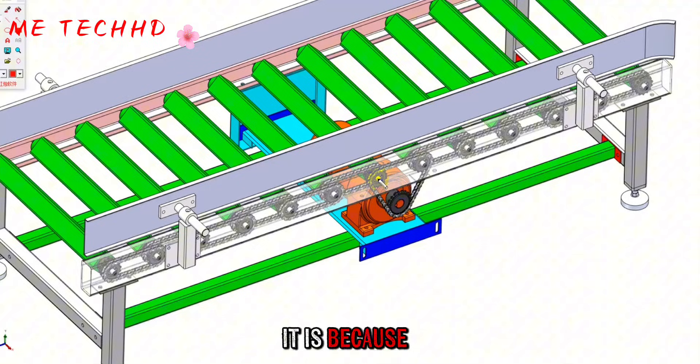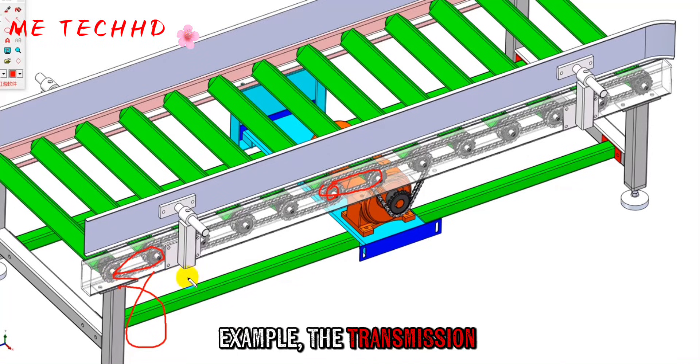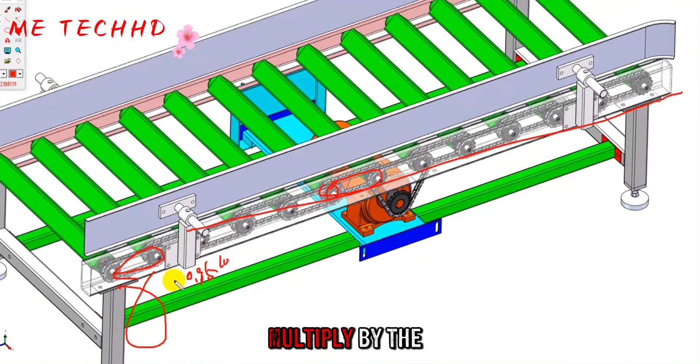If you put the motor on this side when it starts, for example, the transmission efficiency of our chain is generally 0.95. So 10 segments are 0.95 to the 14th power, multiply by the power of our motor, which is more than a kilowatt.